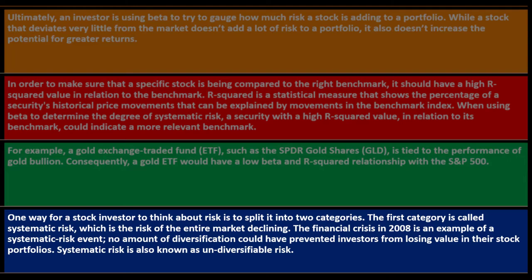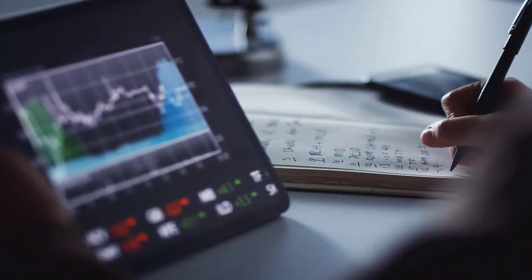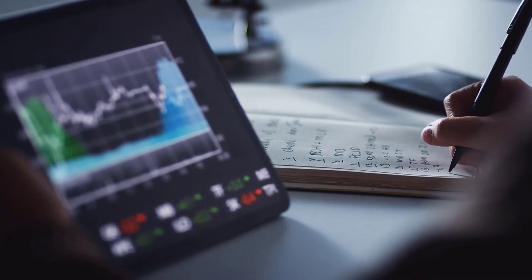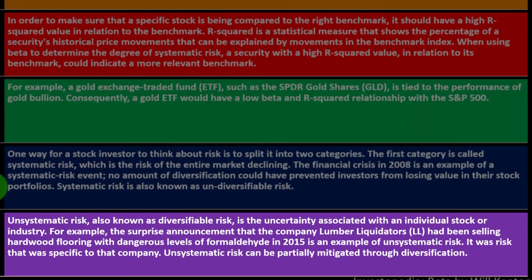One way for a stock investor to think about risk is to split it into two categories. The first is systematic risk — the risk of the entire market declining. The financial crisis of 2008 is an example: no amount of diversification could have prevented investors from losing value in their stock portfolios. Systematic risk is also known as undiversifiable risk.